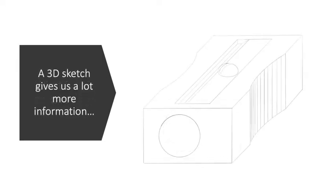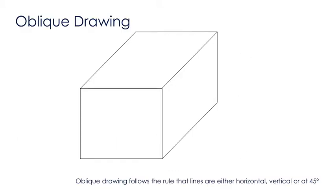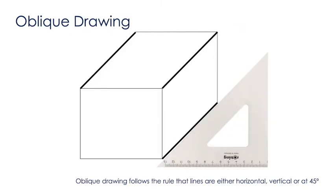However, if we take a three-dimensional sketch of the same object, it's much more recognisable as a pencil sharpener. Oblique drawing is a simple method of drawing a 3D image. An oblique cube only consists of three types of line: horizontal, vertical, or at 45 degrees.